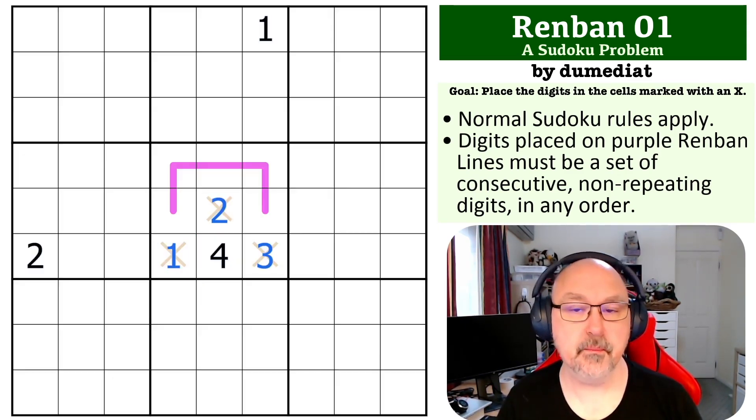And that's the solution to the problem. But it's all about understanding that this four forces this Renban line to be five to nine.